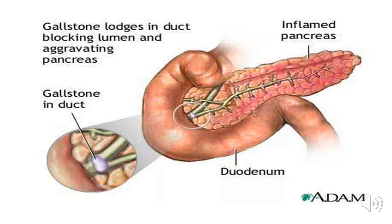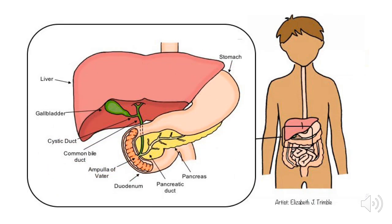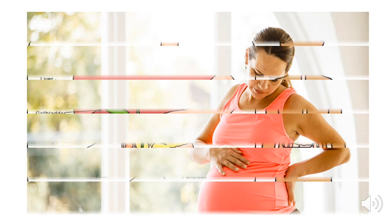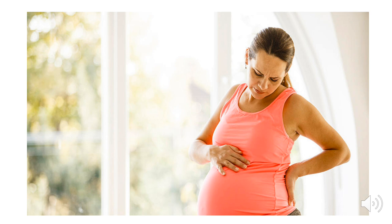Bile duct obstruction can be diagnosed by testing serum ALP and GGT together. In a pediatric patient, osteoblasts are active in depositing bony matrix, so ALP levels will be elevated. To confirm that ALP elevation is due to bile duct obstruction, it should be coupled with the GGT result. Similarly, in a pregnant woman who has a placenta elevating her ALP, diagnosing bile duct obstruction requires backing up the ALP result with serum GGT level.